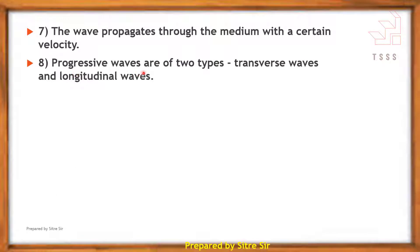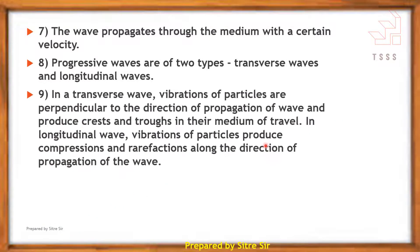Progressive waves are of two types: transverse waves and longitudinal waves. In transverse waves, vibrations of particles are perpendicular to the direction of propagation of the wave and produce crests and troughs in the medium of travel.